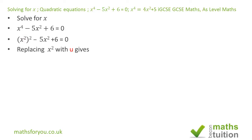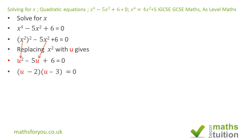Now if we replace x squared with u, we have u squared minus 5u plus 6 equals 0. We can now factorize this as u minus 2 into u minus 3 equals 0. Checking: minus 2 times minus 3 gives plus 6, minus 2 times u gives minus 2u, minus 3 times u gives minus 3u — so minus 2u minus 3u gives minus 5u. That's correct.